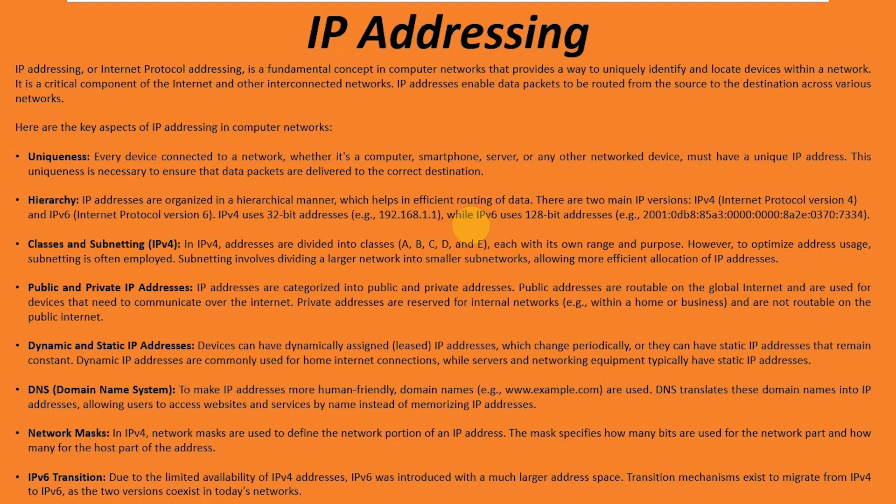There are two types of IP addresses: IPv4, which you've probably experienced and is the most commonly used for now until IPv6 takes over. IPv4 is a 32-bit address and IPv6 is a 128-bit address, and you can see in the examples here that they're quite different in length.